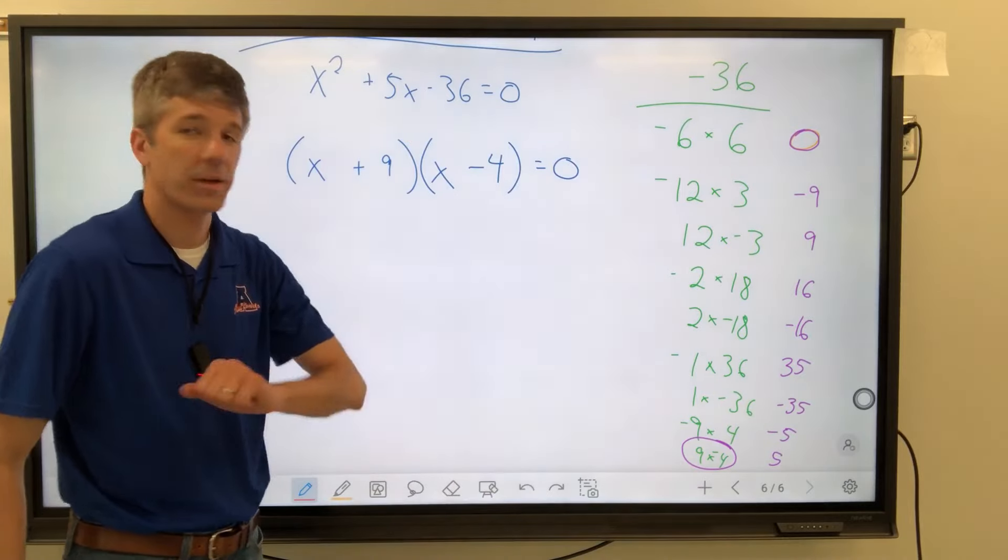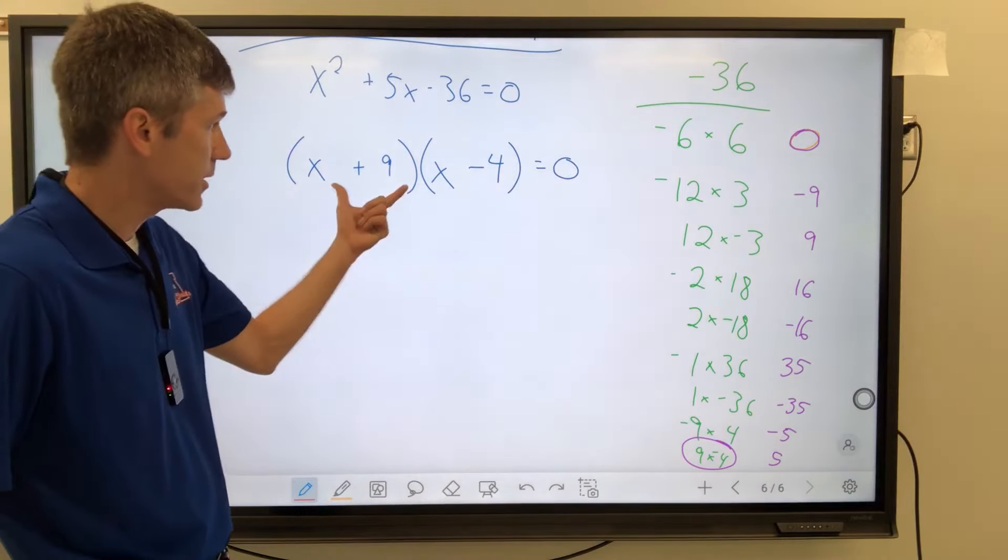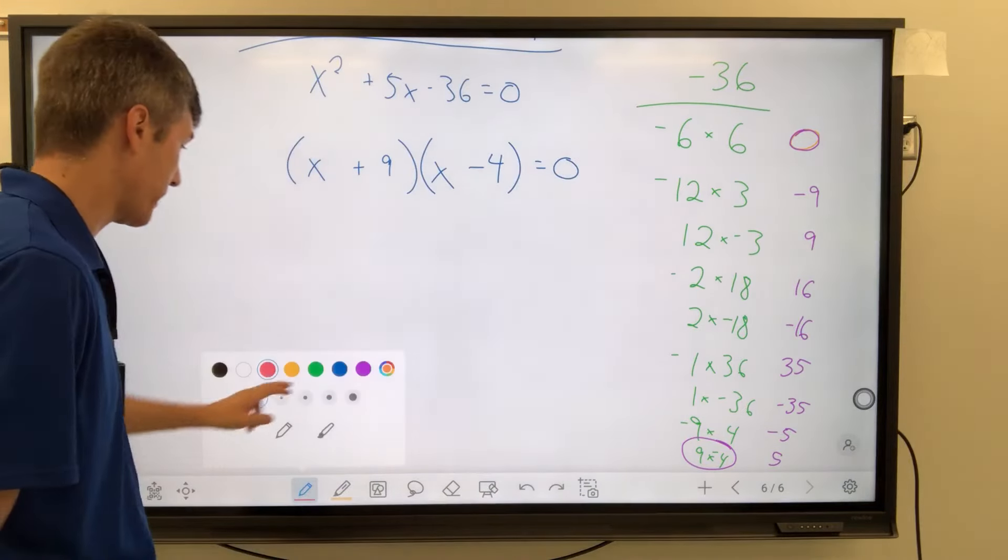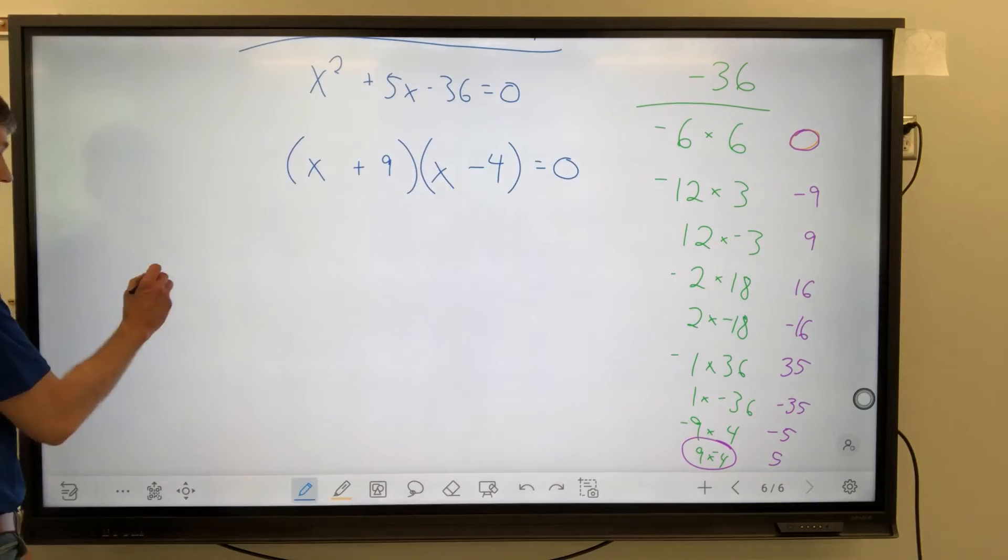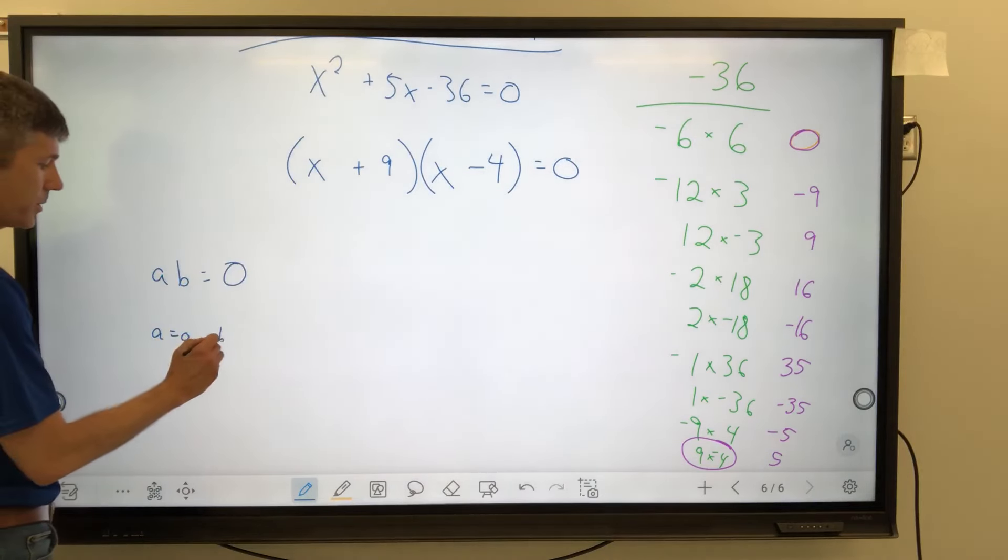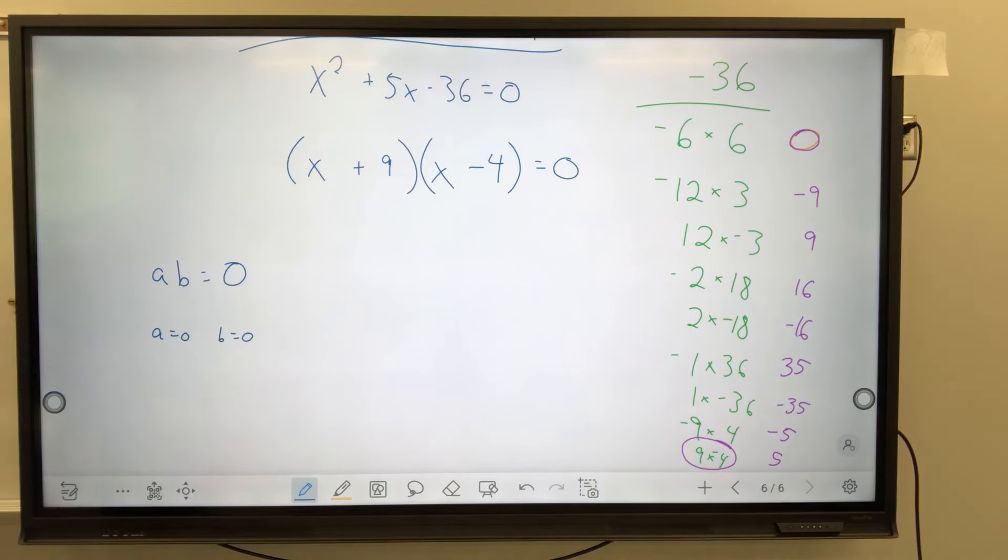I've got to solve for X. If we have a factor times another factor and it equals 0, then somebody equals 0. Somebody. Somewhere. One more time. Let me write it. I've written this in another video. If A times B equals 0, then either A equals 0 or B equals 0.